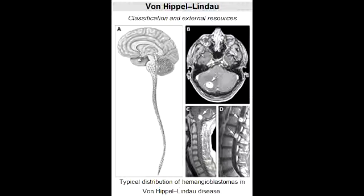What are hemangioblastomas? Hemangioblastomas are tumors of the central nervous system that originate from the vascular system, usually during middle age.